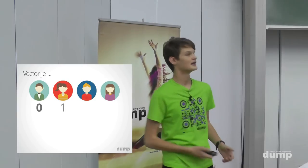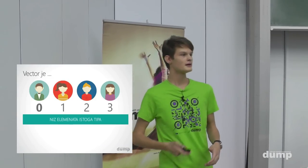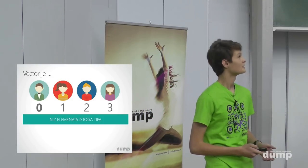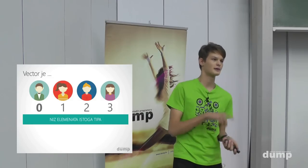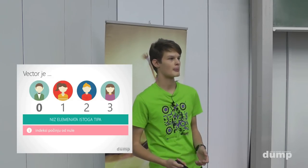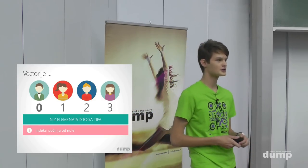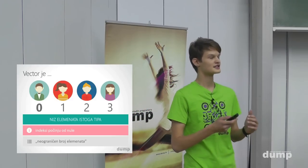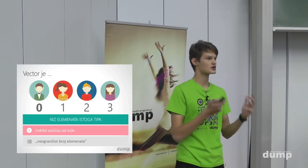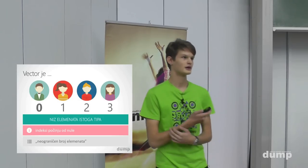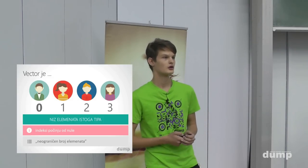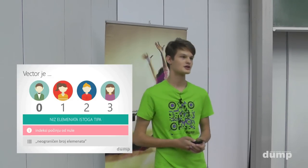Prvoj osobi sam dao redni broj nula jer indeksi u programiranju počinju od nule — to je postignuto dogovorom. U svakom vektoru prvi član ima indeks nula. Još jedna super stvar kod vektora je to što imaju teoretski neograničen broj elemenata — možemo spremiti onoliko članova koliko nam memorija računala dopušta. Isto tako, ne moramo znati unaprijed koliko će članova imati naš vektor — možemo ih dodavati u hodu.